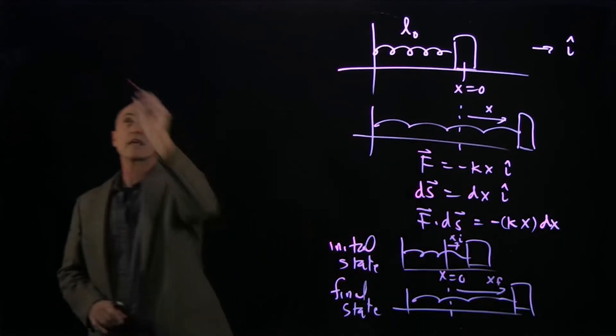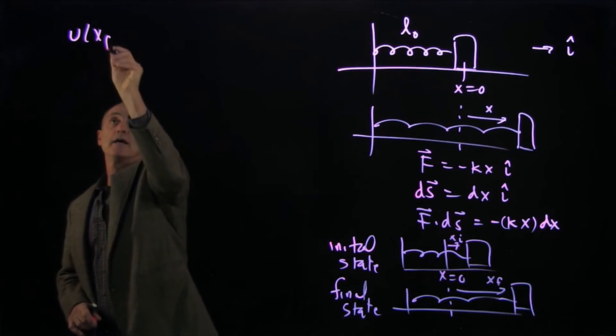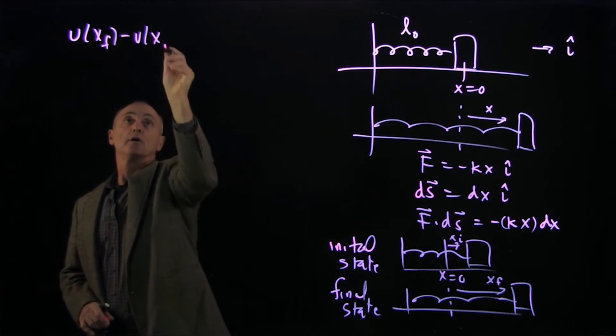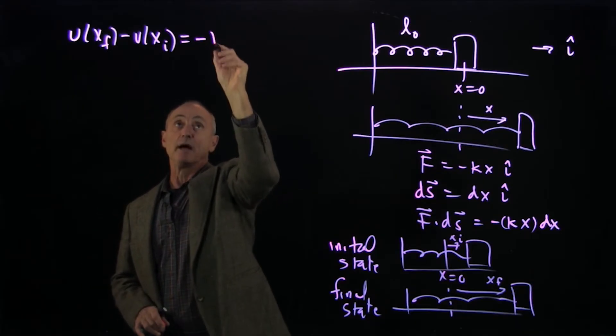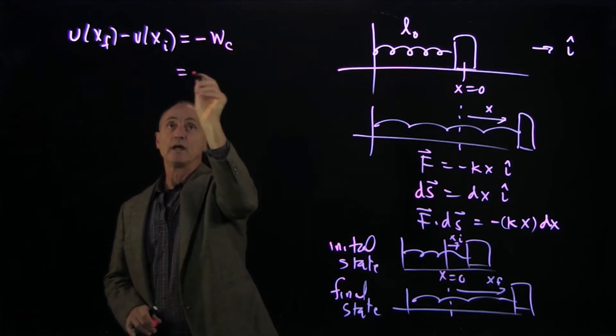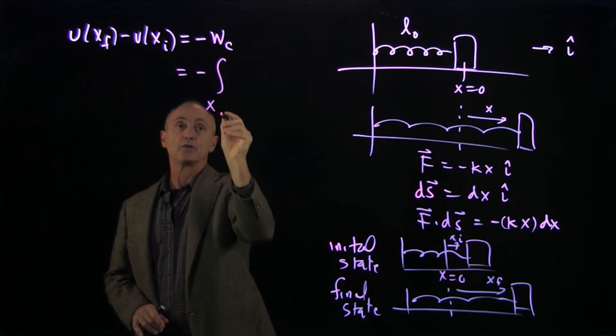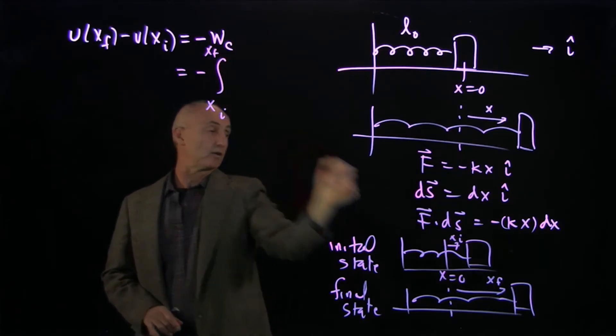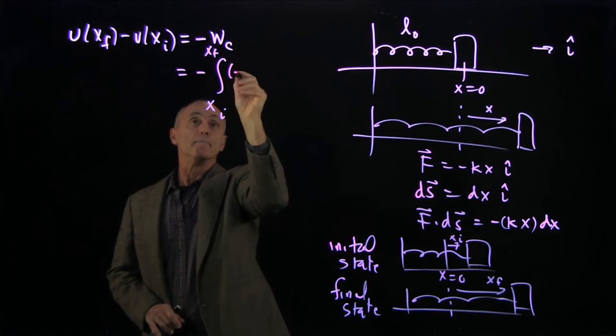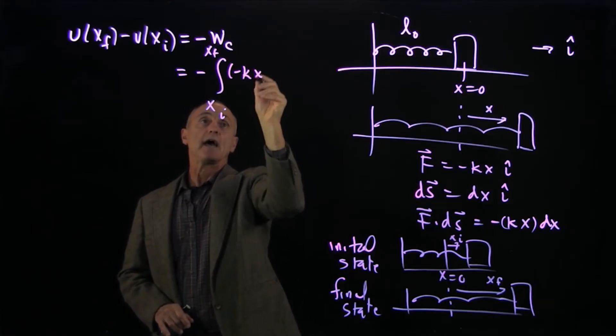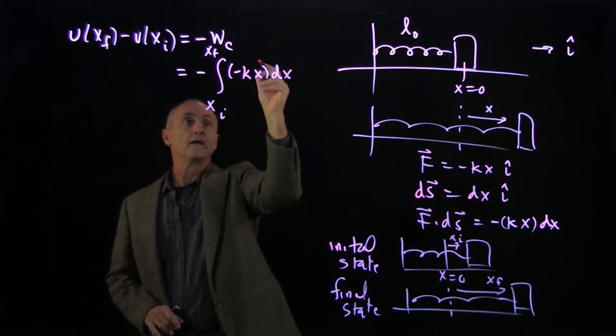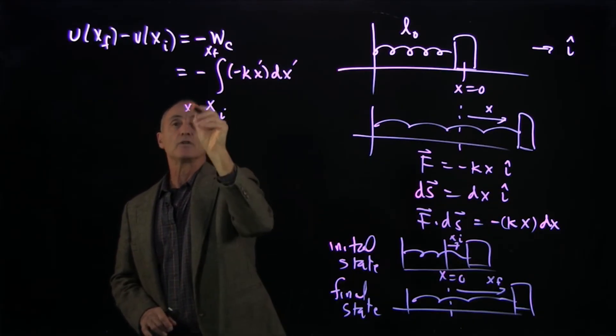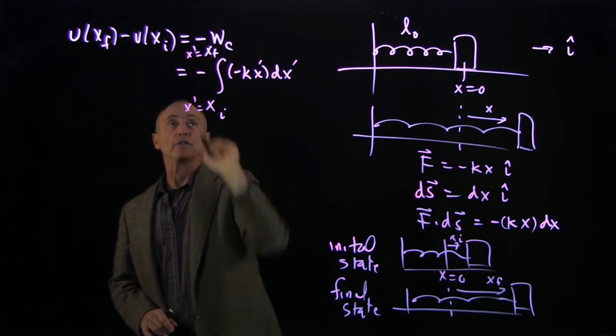So now let's calculate the change in potential energy between our initial and our final states. Now recall, there's a minus sign because it's minus W conservative. That's minus the integral from x initial to x final of minus kx dx. We have two minus signs.